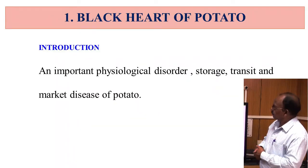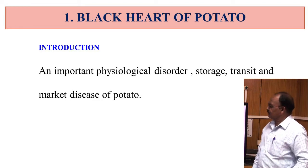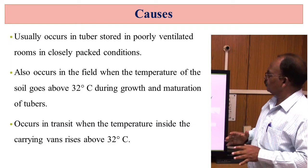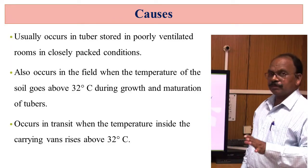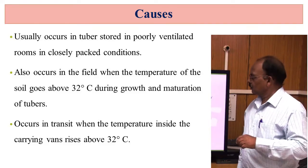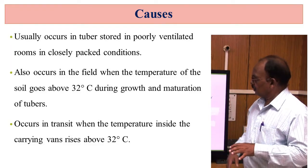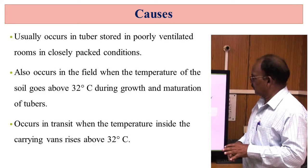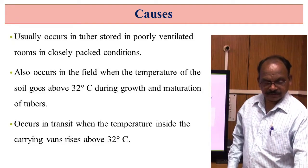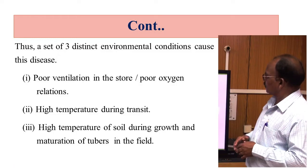Black heart of potato is an important physiological disorder, storage, transit and market disease of potato. The symptoms usually occur in tubers stored in poorly ventilated rooms in closely packed conditions. It also occurs in the field when the temperature of the soil goes above 32 degrees Celsius during growth and maturation of the tubers, and also in transit when the temperature inside the carrying bags rises above 32 degrees Celsius. Thus a set of three distinct environmental conditions cause this disease.